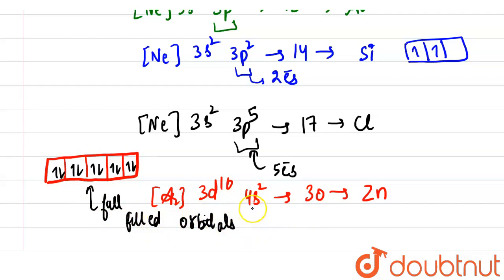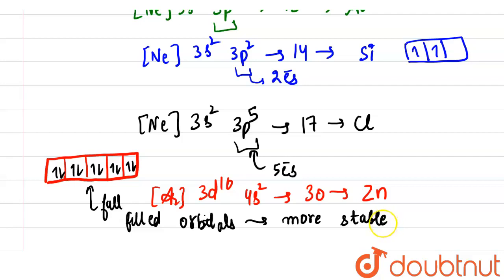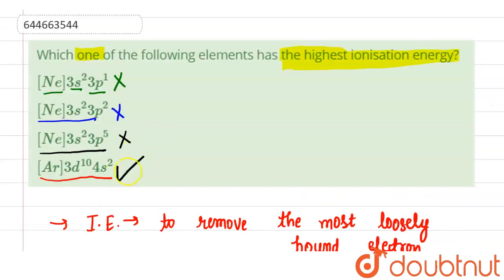As we know, fully filled orbitals are more stable, so the zinc element does not want to lose its electron from its valence shell. Therefore, zinc requires the highest ionization energy to remove the electron from its isolated gaseous atom. So option four — [Ar] 3d10 4s2, which is zinc — is the correct answer.